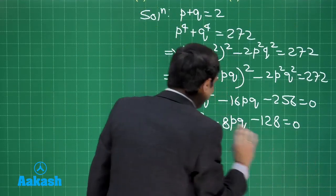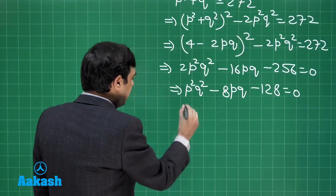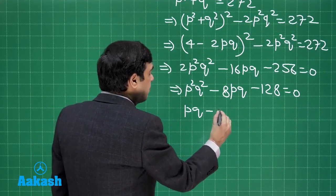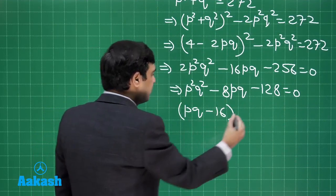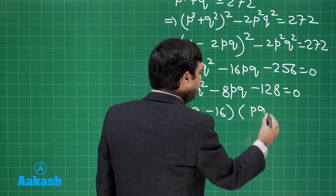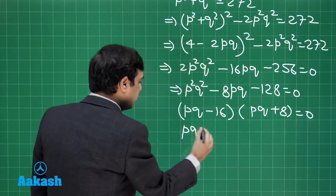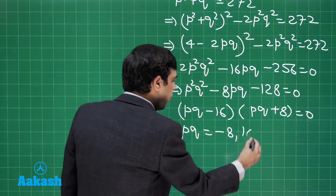Or (pq)² minus 8pq minus 128 is equal to 0. So we finally obtain a quadratic in product pq which can be factorized as (pq minus 16) into (pq plus 8) is equal to 0. So the product pq can be minus 8 or 16.